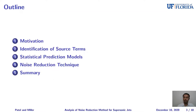This slide shows a brief outline of my presentation today. I'll start with the motivation of why we are doing what we are doing. Then I'll give a brief overview of the identification of source terms for two different components of supersonic jet noise, which are the fine-scale mixing noise and shock-associated noise. Using the identified source terms, we'll develop statistical prediction models, and then quantify the noise reduction from the fluidic injection noise reduction technique. Finally, I'll summarize my results and give conclusions.